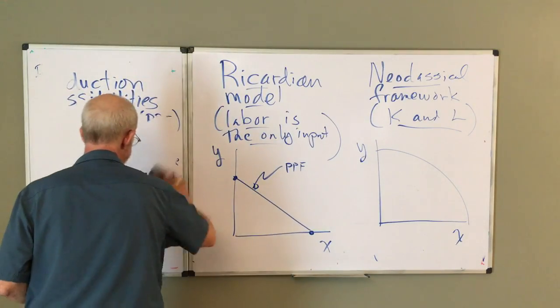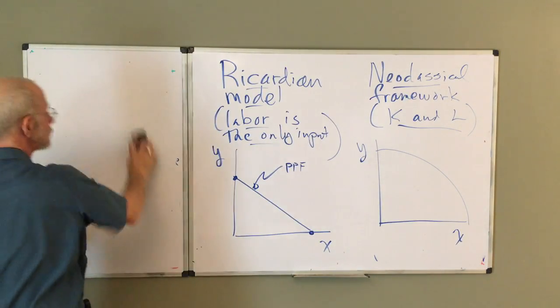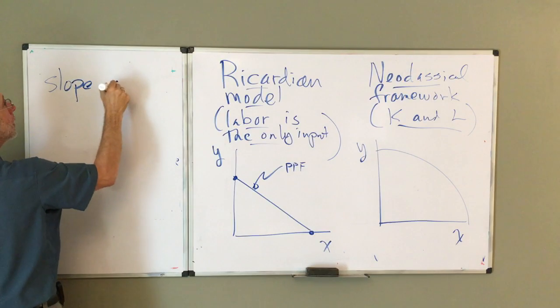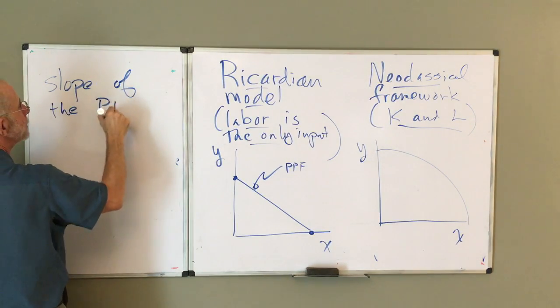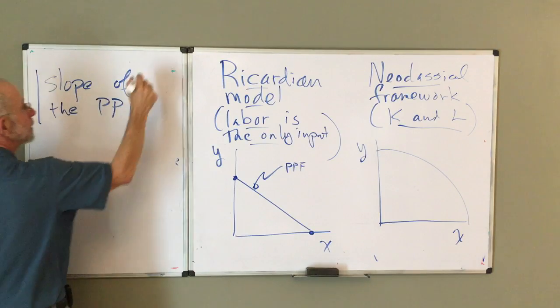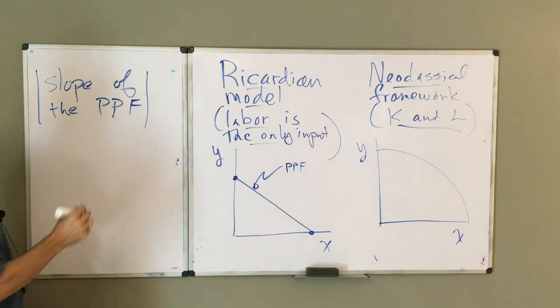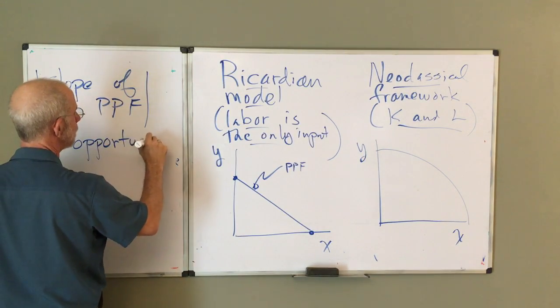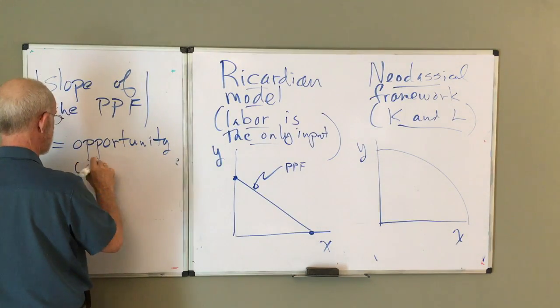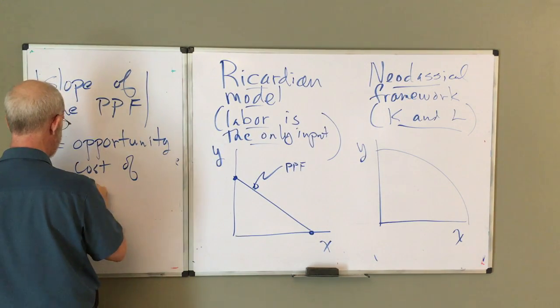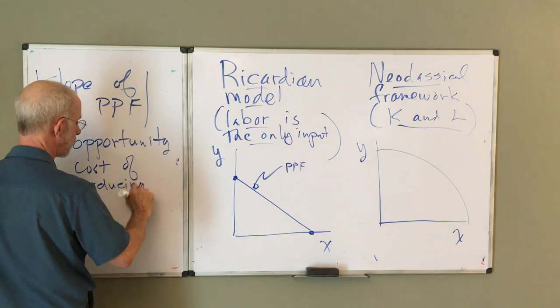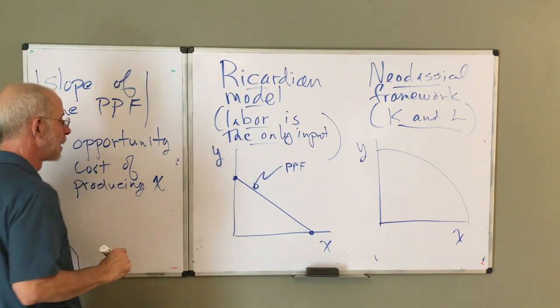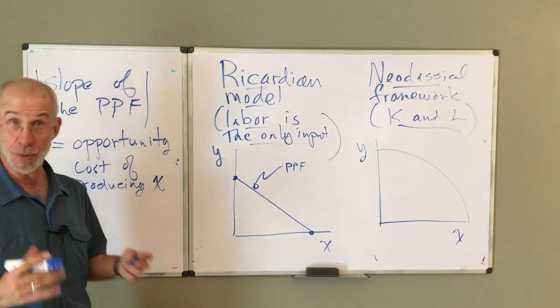So a couple of things to note about the PPF. If the slope of the PPF, actually the absolute value, is equal to the opportunity cost of producing X. If we've got X on the vertical axis, it's going to be the opportunity cost of producing X.